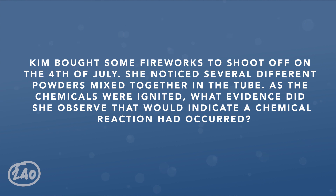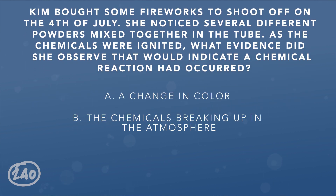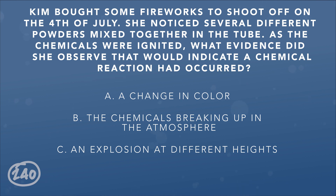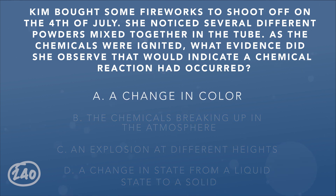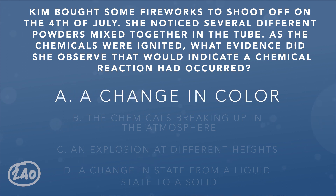Question 4: Kim bought some fireworks to shoot off for the 4th of July. She noticed several different powders mixed together in the tube. As the chemicals were united, what evidence would indicate a chemical reaction had occurred? A. A change in color, B. The chemicals breaking up in the atmosphere, C. An explosion at different heights, D. A change in state from liquid to solid. The correct answer is A. Indicators of a chemical reaction include bubbles, a change in temperature, a color change, and production of precipitates.